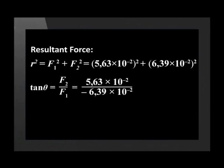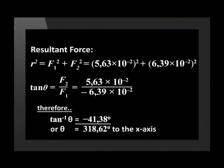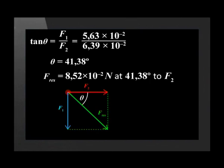And the resultant of the two forces is 8.52 times 10 to the negative 2 Newtons. The direction of the resultant force is minus 41.38 degrees downwards from the horizontal force F2. Now we solve for theta using the trig function. The direction of the resultant force is 41.38 degrees to F2.